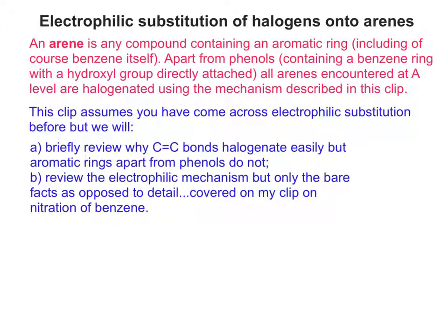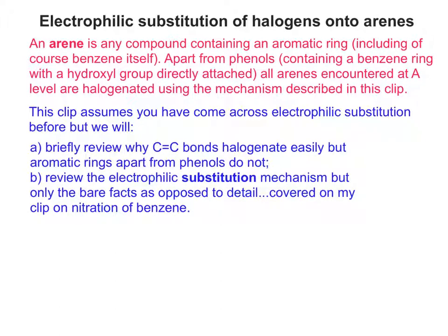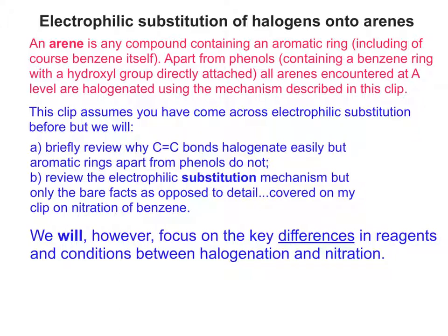Although this clip assumes you've come across electrophilic substitution before, we'll look again very quickly at why carbon-carbon double bonds halogenate but aromatic rings, apart from phenols, do not. We'll also look at the electrophilic mechanism for substitution — just the bare facts, not going into detail, as I've already covered that in my clip on nitration of benzene. We will definitely take the time to focus on differences in reagents and conditions between halogenation and nitration of aromatic rings.